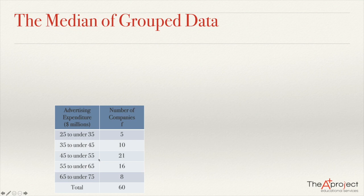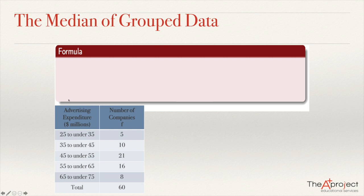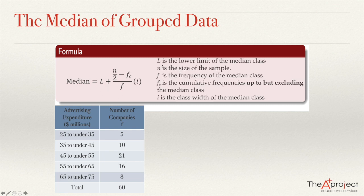If we want to do that, what we need to do is use this formula. The median will be L plus N over 2 minus F sub C, divided by F, multiplied by I. L is the lower limit of the median class. N is the size of the sample. F is the frequency of the median class. F sub C is the cumulative frequency up to but excluding the median class. And I is the class width of the median class.